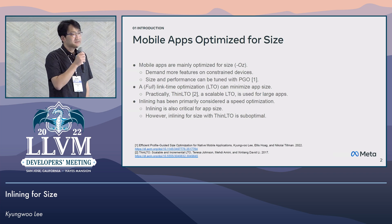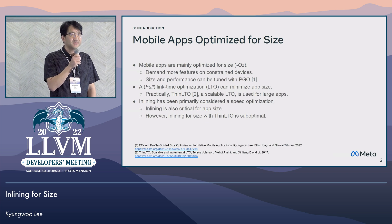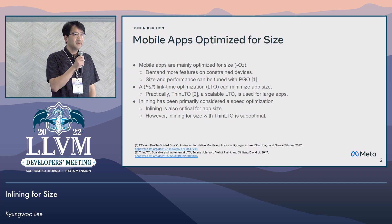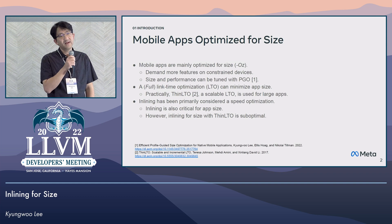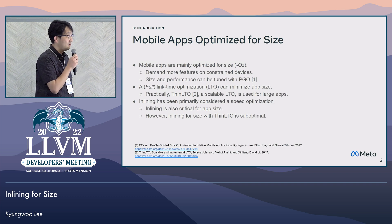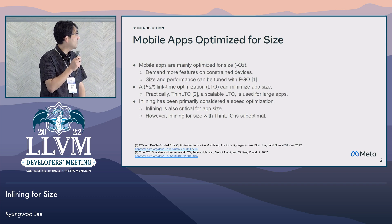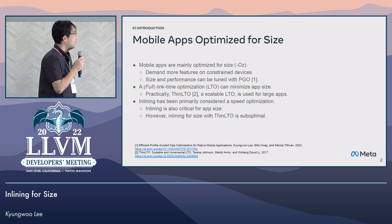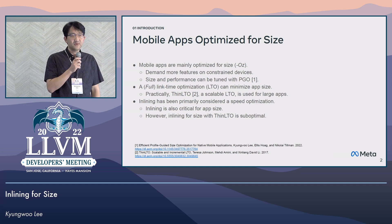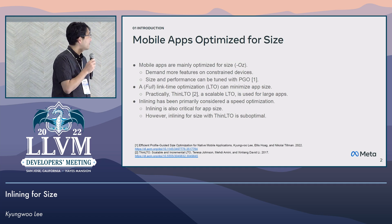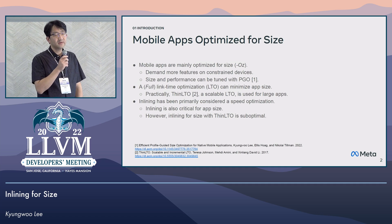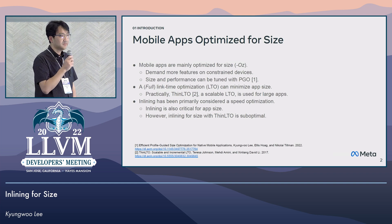Mobile apps are mainly optimized for size because new features are constantly added. In general, size and performance can be tuned with profile-guided optimization, PGO. Link-time optimization, LTO, can minimize code size at the cost of long build time. So practically, Thin LTO, a scalable LTO, can be used when building large apps.